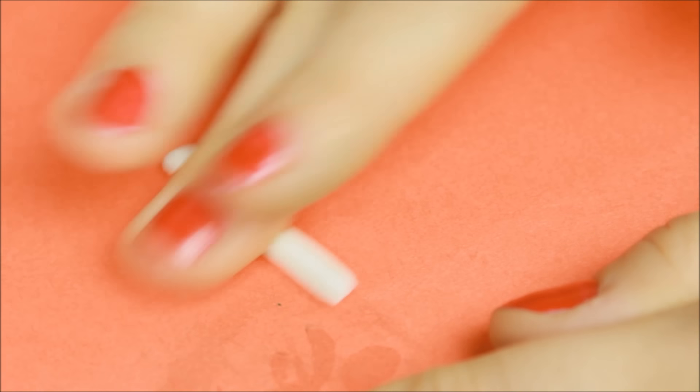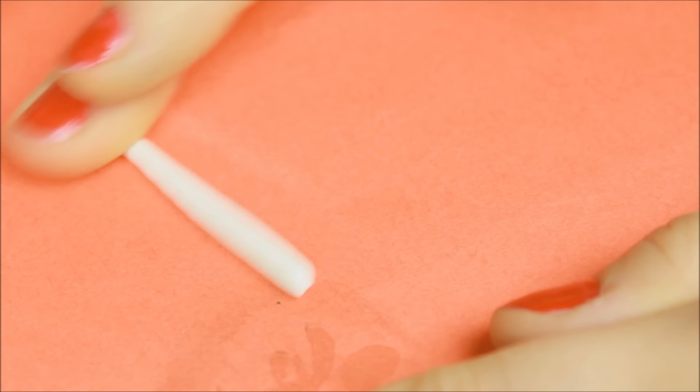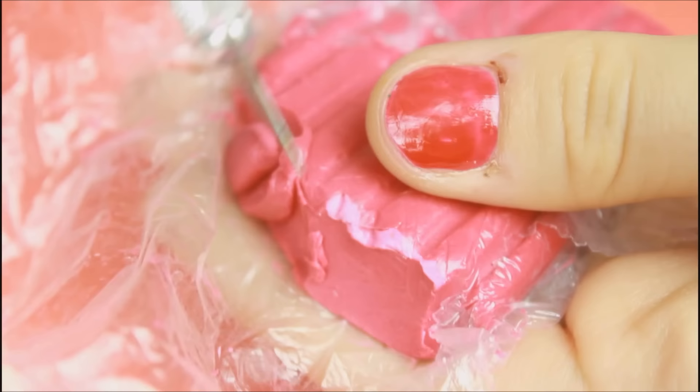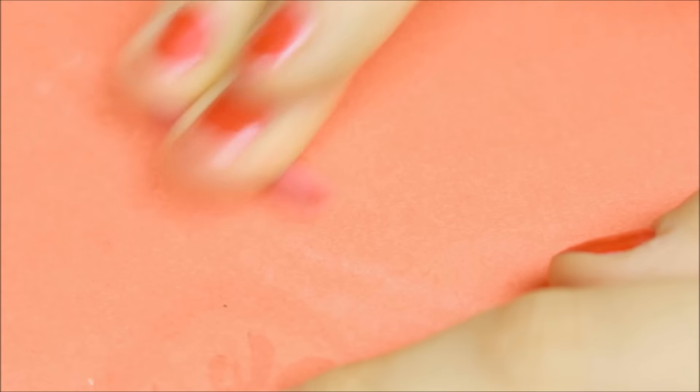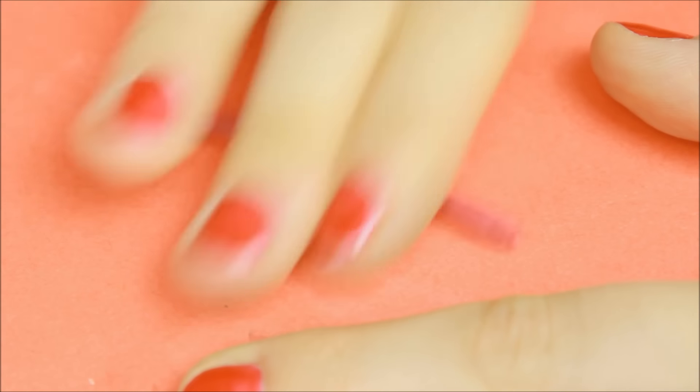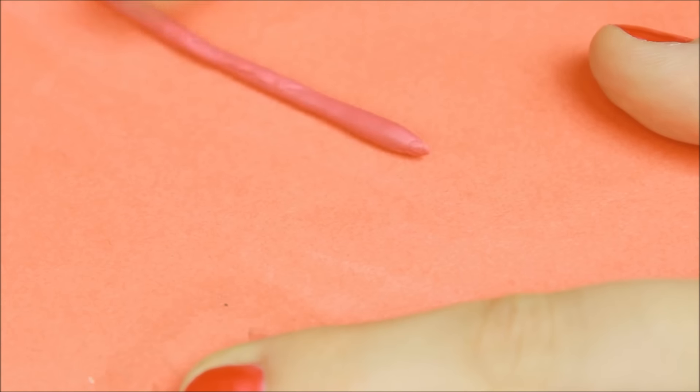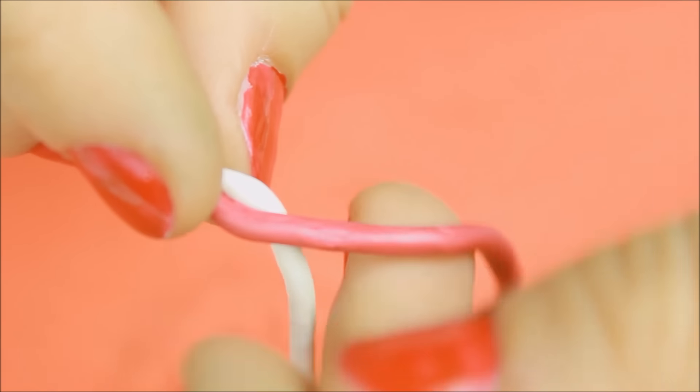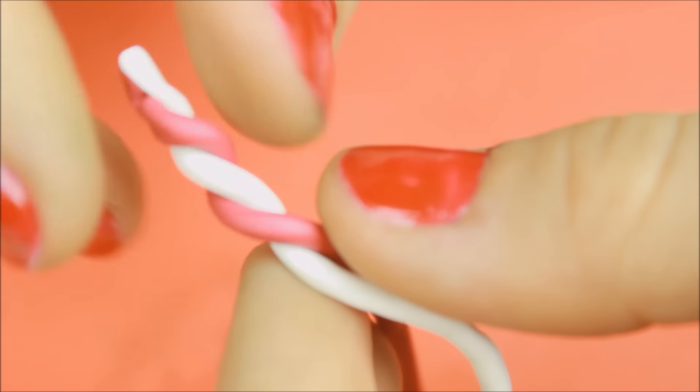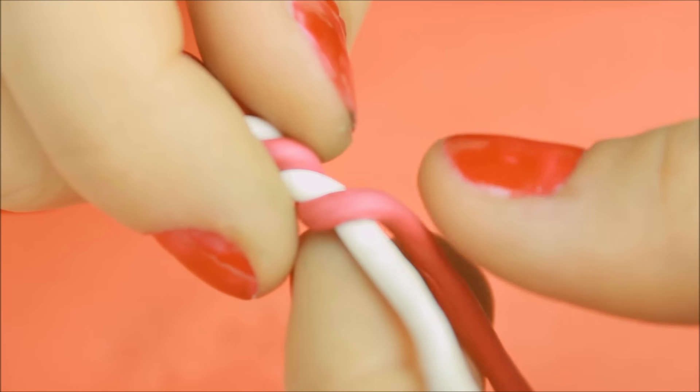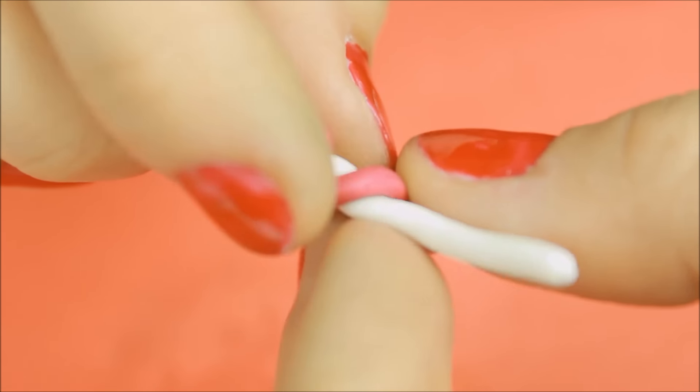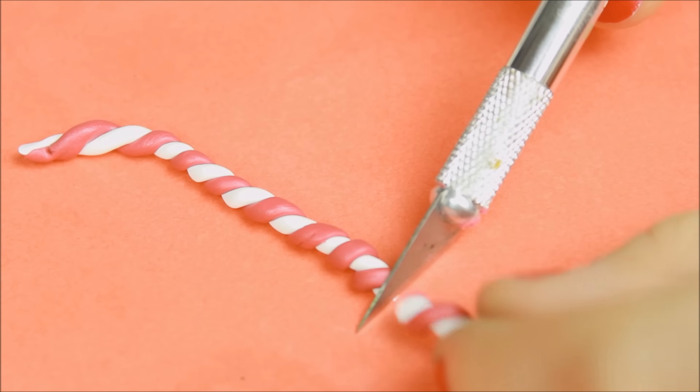Das ist ganz leicht gemacht. Hier braucht ihr ein weißes Stück. Er wärmt das kurz in der Hand und dann rollt es so zu so einer kleinen Wurst. Und dann braucht ihr auch noch rote Farbe. Diese hier ist jetzt so ein bisschen weinrot. Die habe ich auch abgeschnitten und dann gerollt. Jetzt nehmt ihr beide und wenn die ungefähr gleich dick sind, könnt ihr die oben zusammenquetschen und dann so vorsichtig mit den Fingern ineinander verdrehen. Und mit Sicherheit wisst ihr jetzt schon, was das hier auch wird.